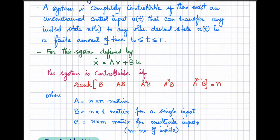With the help of the state space matrices A, B, and C, you can define the controllability matrix and then check the controllability of your system — that is, whether you can change the system state to any other desired state with the help of an unconstrained input in a finite amount of time or not.